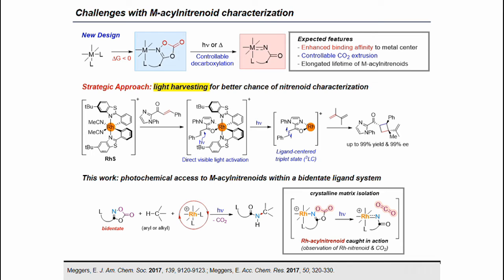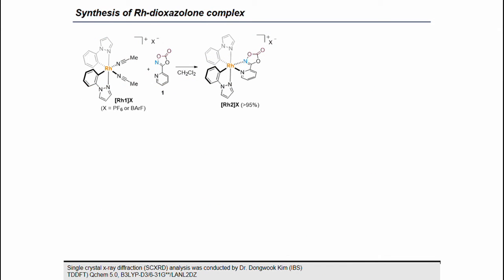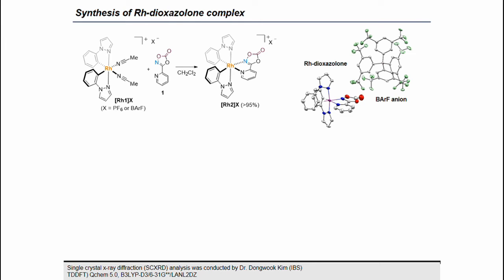In this work, we have newly designed a photoresponsive octahedral rhodium catalyst system that can undergo catalytic CH amination reactions under photochemical reaction conditions. Furthermore, we were fortunate to catch a glimpse of nitrinoid formation by X-ray photocrystallographic analysis using rhodium dioxazolone complexes. To start with, we prepared a cyclometallated rhodium complex decorated with phenyl-pyrazolyl ligands. When this rhodium acetonitrile complex was mixed with pyridine-dioxazolone in deuterated chloromethane, a quantitative amount of rhodium dioxazolone complex (Rh-2) was observed, and the crystal structure with BARF anion was also obtained.